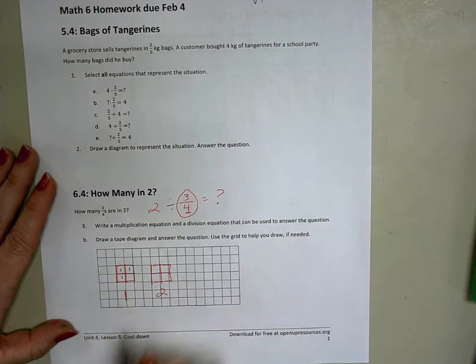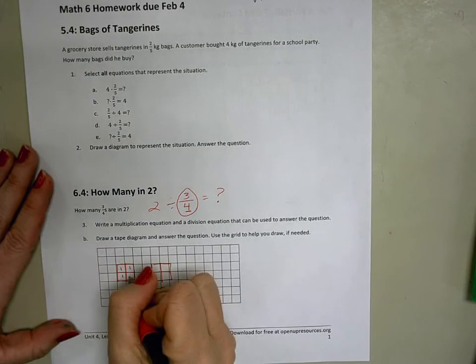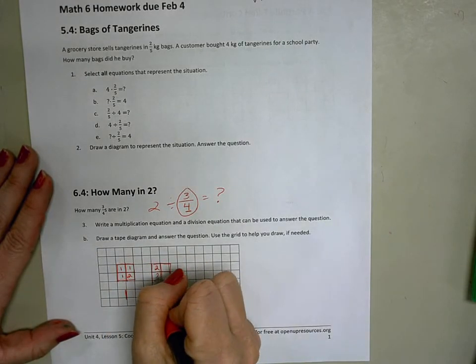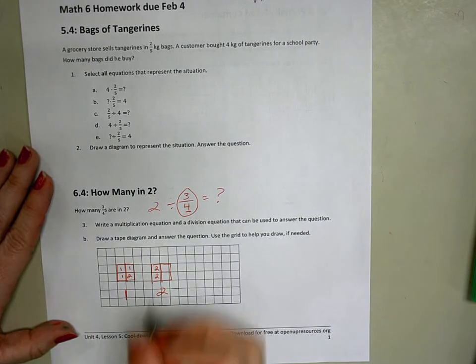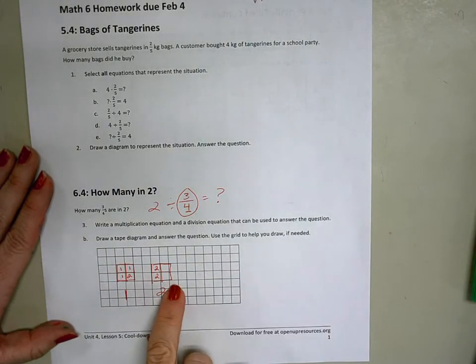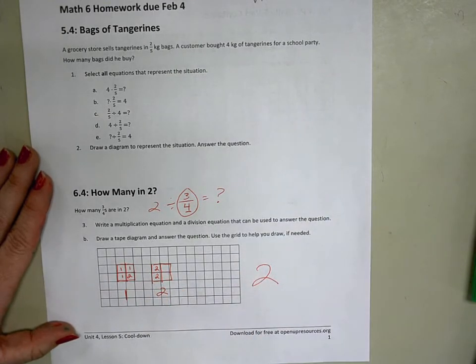So there's one group of 3. That's one group of 3 fourths. Here's a second group of 3 fourths. And then we don't have a third group. We don't have enough. So here's my whole number. My whole number is 2. I have 2 groups of 3 fourths.